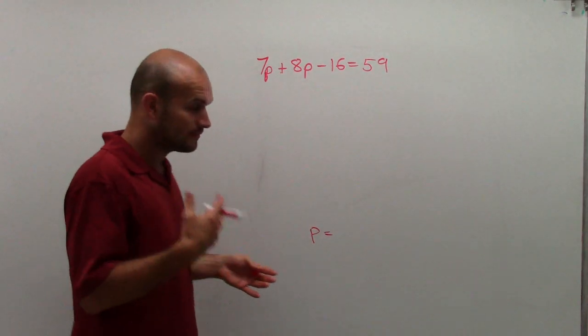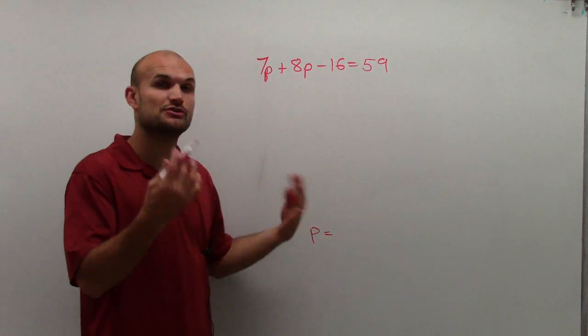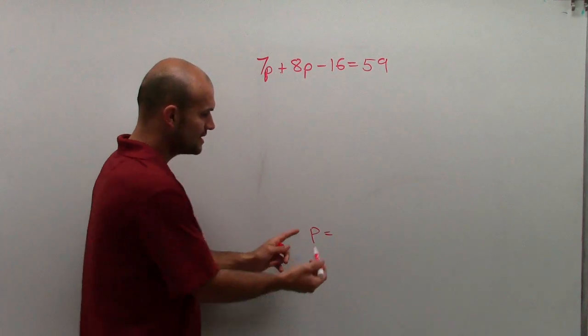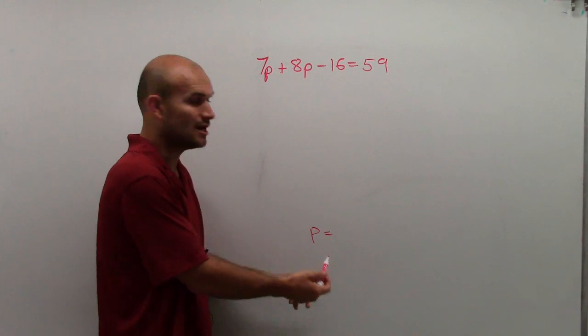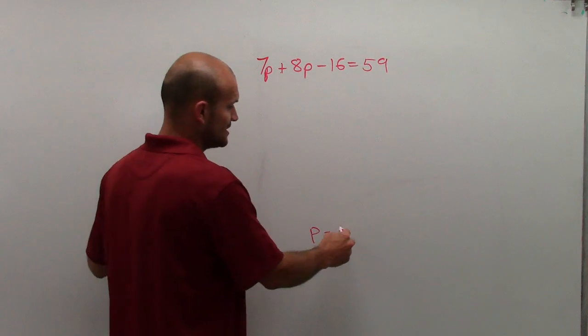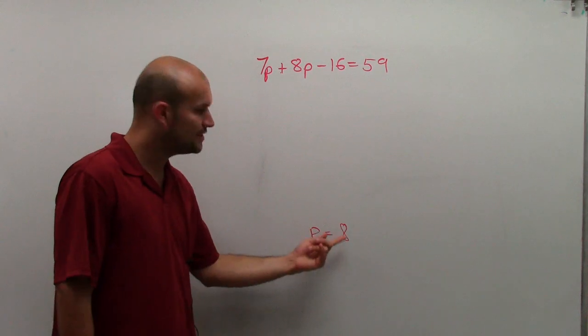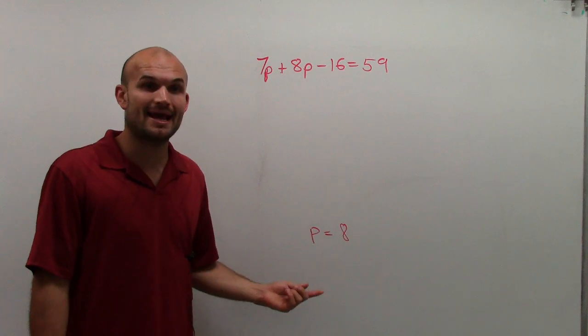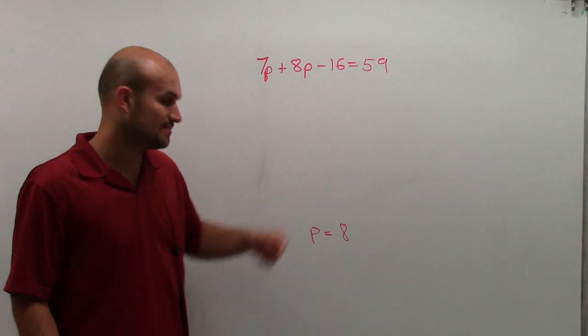You could try to do the math in your head, or you can use a process to get the variable by itself. If I had the variable by itself and say p equals 8, you know the value of p is 8. So 8 is the value that would make this true. However, I don't know if that's the value.